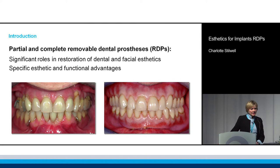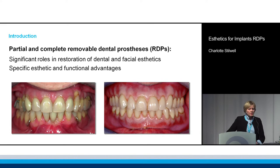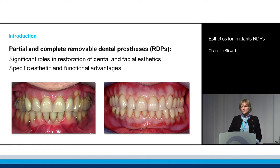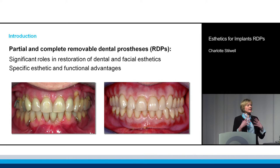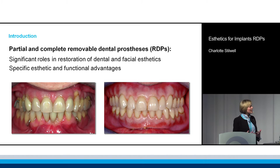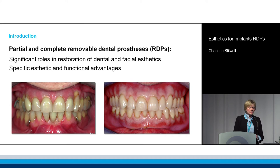Partial and complete removable dental prosthesis undoubtedly have a very significant role to play in the restoration of dental and facial aesthetics. There are some very specific aesthetic and functional advantages of having prosthetic flanges — that component which replaces, much closer to real life, not just teeth but the missing hard and soft tissues as well.